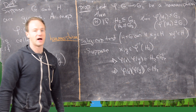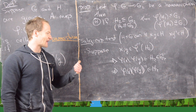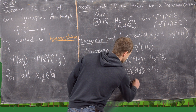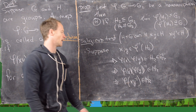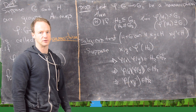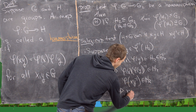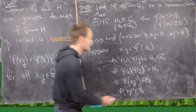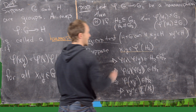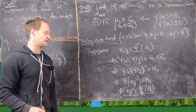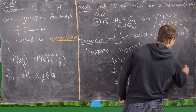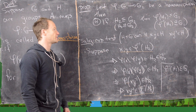Since H2 is a subgroup of G2, the subgroup test tells us phi of x times phi of y inverse is in H2. Because phi is a homomorphism and by property 2, we can write this as phi of x times y inverse, which is in H2. That means x times y inverse is in phi inverse of H2. We supposed x and y were in the pre-image and concluded x times y inverse is also in the pre-image, so phi inverse of H2 is a subgroup of G1.